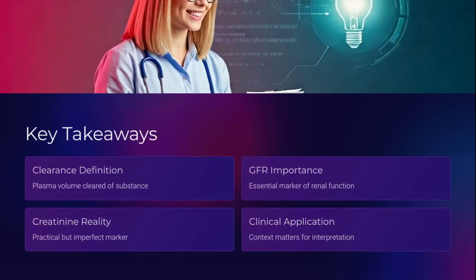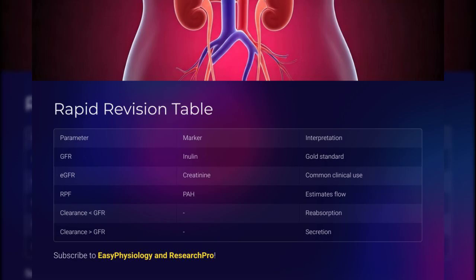Clearance tells us how plasma is purified. GFR is the benchmark. Creatinine is the workhorse. But context is key — always combine physiology with clinical reasoning. That's how good doctors are made. Quick recap: inulin is the gold standard; creatinine is for common use; PAH is for flow. Clearance less than GFR — think reabsorption. Clearance more than GFR — think secretion. And always, always interpret with care.